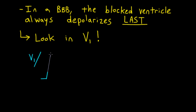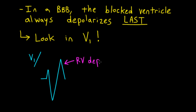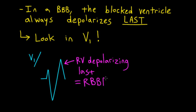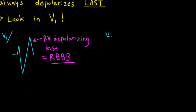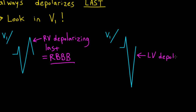Let's look at this wide QRS complex in lead V1. The terminal deflection is positive, so that tells us the right ventricle is depolarizing last — thus the right ventricle is our blocked ventricle, which means we have a right bundle branch block. Now let's look at another wide QRS complex in lead V1. Because the end of the QRS complex is negative, we know that the left ventricle is depolarizing last, which means this is a left bundle branch block.